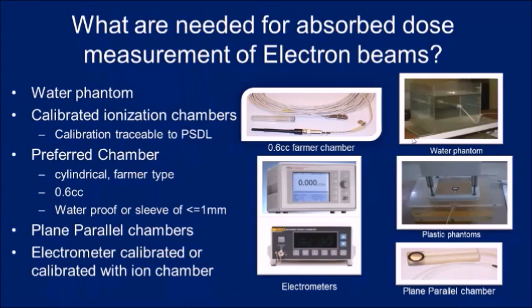What is needed for absorbed dose measurements of electron beams? It is very similar to photon but with some differences. You need a water phantom and calibrated ionization chambers, with calibration traceable to PSDL. The preferred chamber is a 0.6 cc cylindrical chamber, waterproof or with a waterproof sleeve, and also a plane parallel chamber, which is required for low energy electron beams. You also need electrometers, either calibrated with the ion chamber or with a calibration factor, and a plastic phantom.